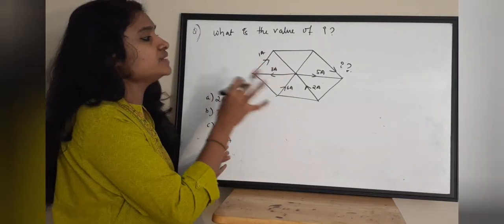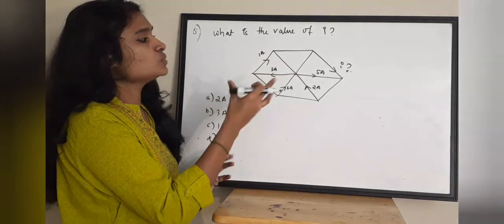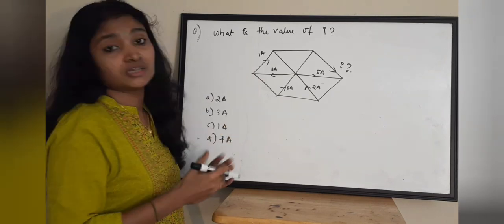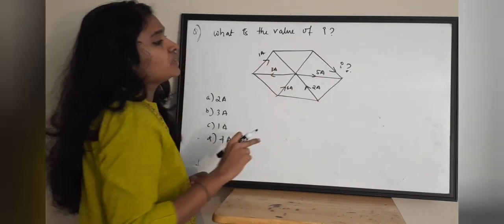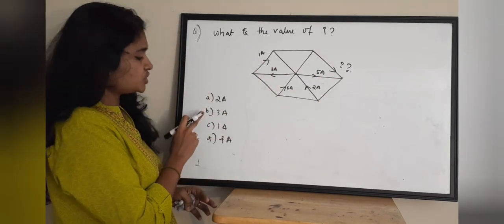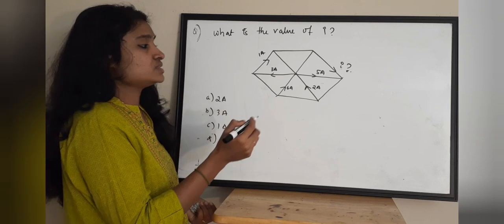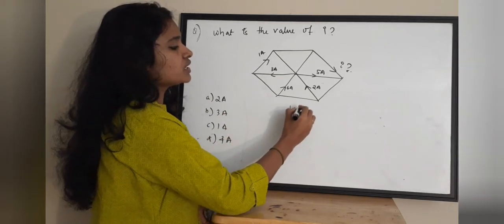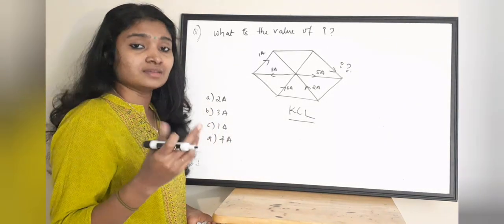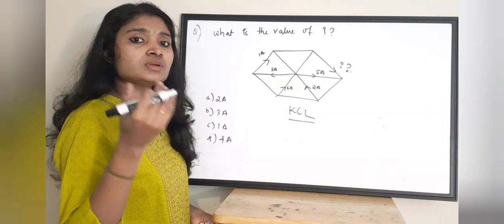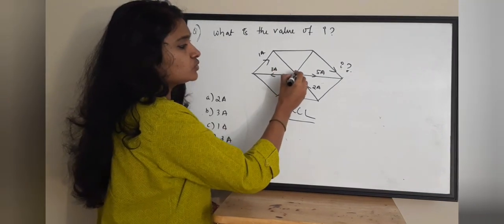Next question: what is the value of current? A network is given with nodes and branches having certain current values. We need to find the value of current i — the current flowing through a particular branch. Options are: A) 2 ampere, B) 3 ampere, C) 1 ampere, D) 4 ampere. To solve this we need to apply Kirchhoff's Current Law.